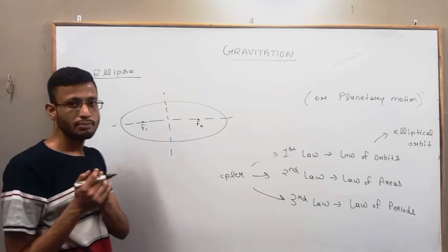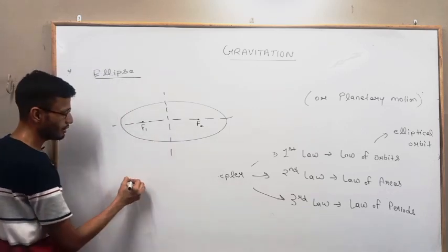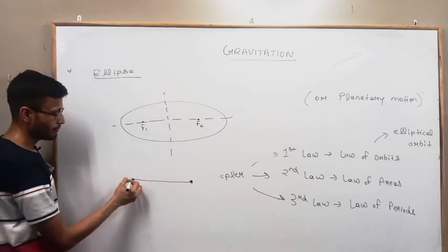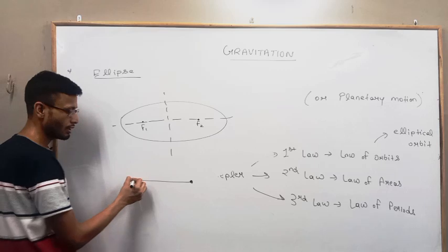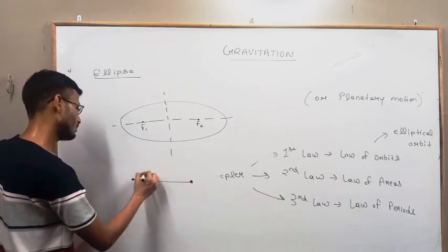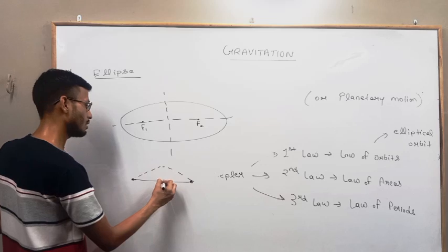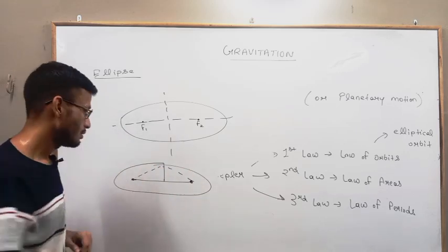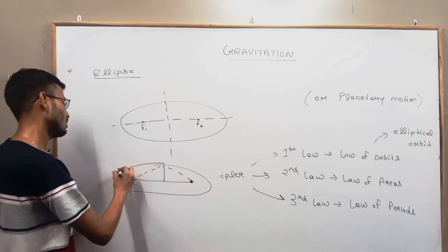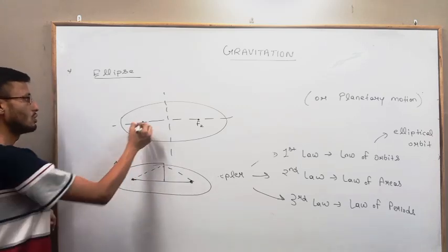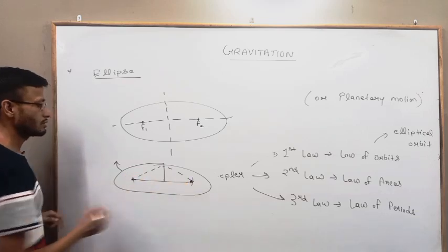Actually, an ellipse can be made by taking a nut bolt and tying a thread, then taking a marker and stretching it to revolve it. The shape you get is known as an ellipse shape. These focus points represent these nuts.